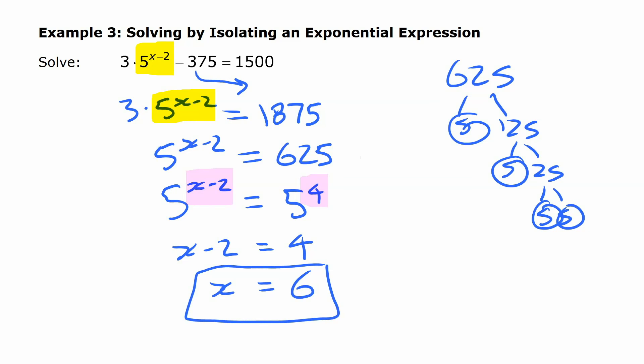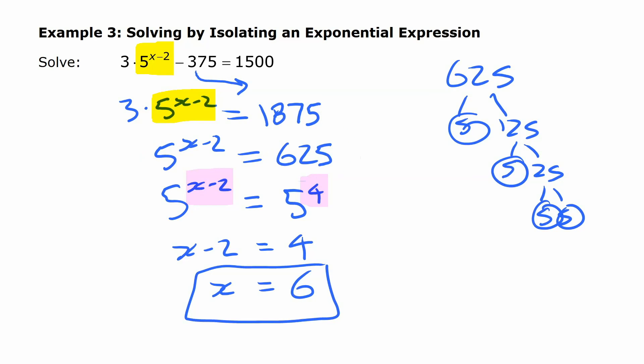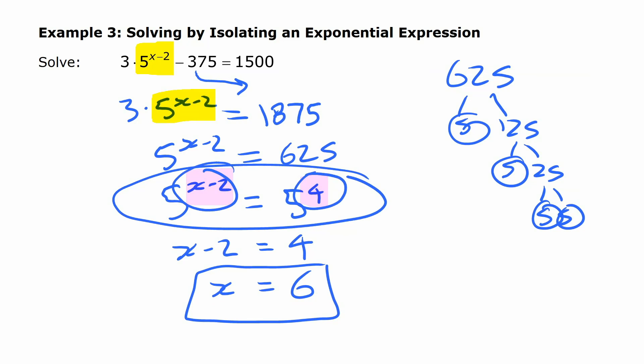It's important to recognize that this method works when you have numbers that can be written as powers of the same base. If instead we had something like 327, we couldn't use this method because we don't know how to write that as a power of 5. But later on, once you learn about logarithms, you'll find you can solve any exponential equation regardless of whether the bases are related. For now, this is a quick and fairly simple way to solve equations where the bases are related — write both sides as powers of the same base, then equate the exponents.